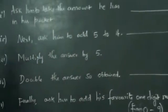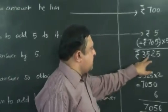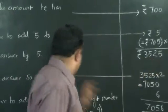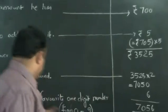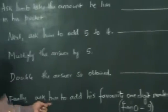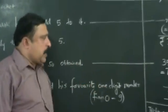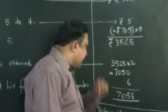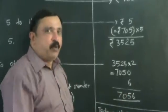It became 705 rupees. Then you multiplied this by 5. It became 3525. You doubled it, it became 7050. You asked him to add any of the favorite digit, single digit lying between 0 and 9. Let's suppose that he added 6, and finally he came out with the answer 7056 and he reported this to you.